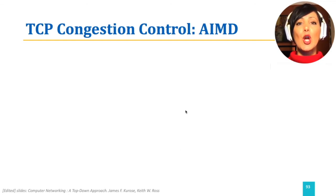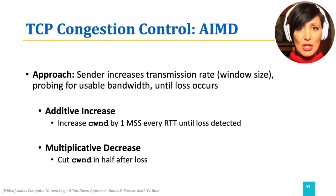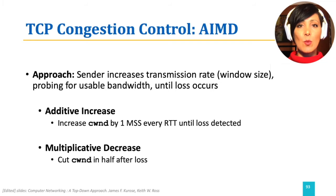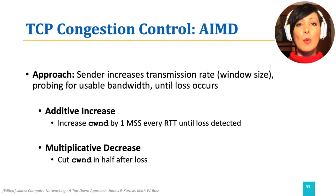TCP congestion control works using a mechanism called AIMD — additive increase, multiplicative decrease. In this mechanism, the sender tries to increase its transmission rate if its probing of the network indicates no congestion. The sender does this by increasing its window size while it has not experienced any loss. So the indicator of congestion for TCP is packet loss. This increase is done by increasing the congestion window size by one MSS, or maximum segment size, every round trip time until it detects loss.